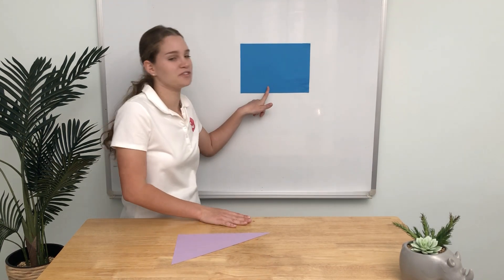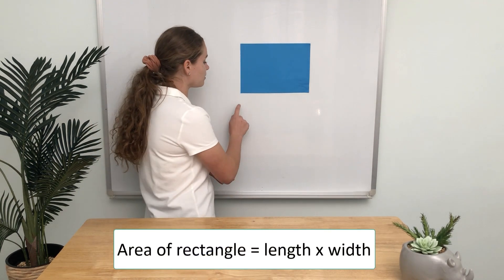Hi, I'm Gemma. Today we're going to understand how to calculate the area of triangles. But first, let's have a look at this rectangle. We should already know to find the area of a rectangle, we have to multiply the length by the width.